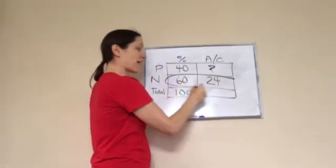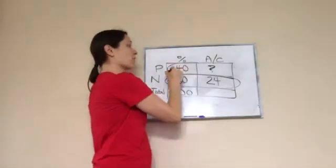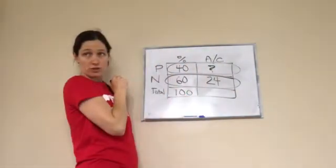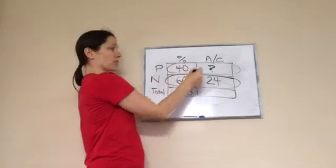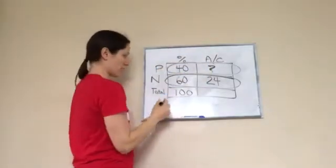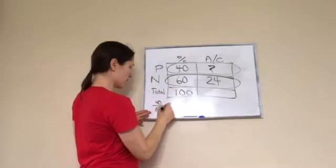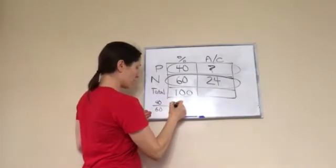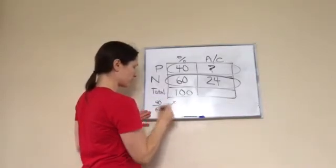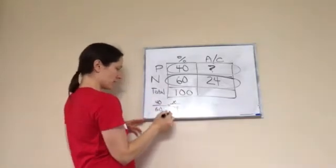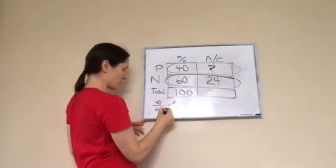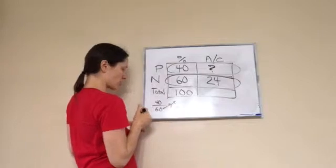Then I have one row that I know everything about, then I have a row that I want to know about. So 40 over 60 equals X over 24. Do you remember how to do this? Cross multiply. 60 times X equals...